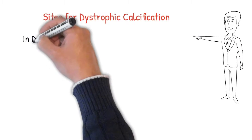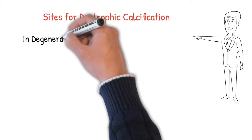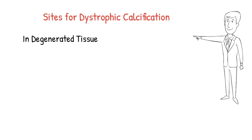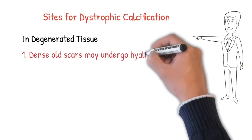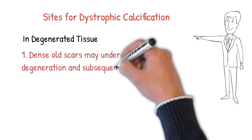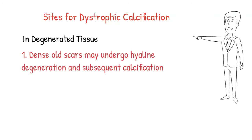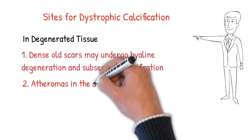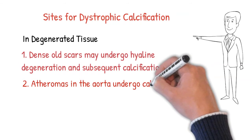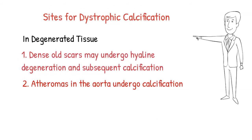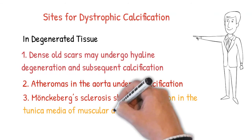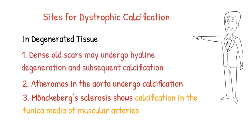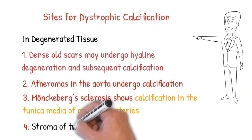Calcification can also occur in degenerated tissue such as old scars — when we get damaged, fibrous tissue is deposited forming a scar, and calcium can be deposited there. Inside the aorta, atheromas are present and calcium can deposit over them. In Monckeberg's sclerosis, the tunica media of muscular arteries — among the three layers tunica intima, media, and adventitia — the calcium salts deposit into the media.